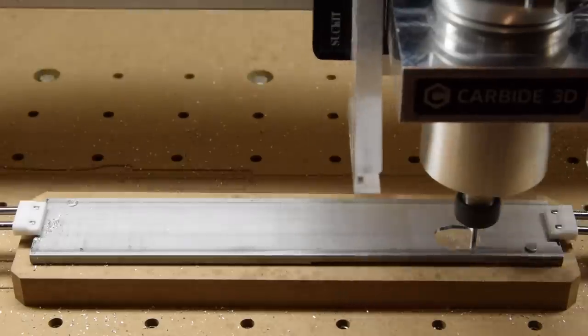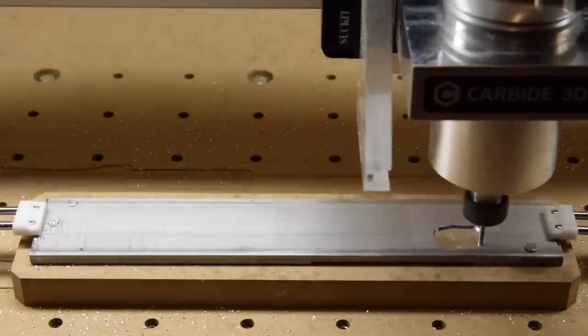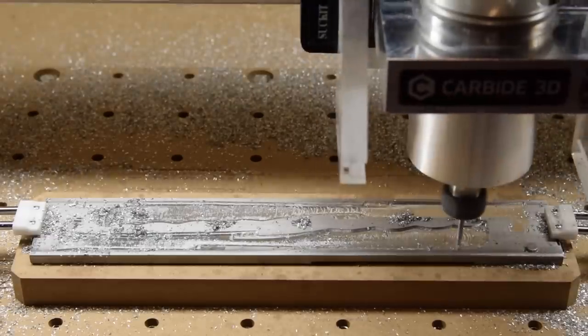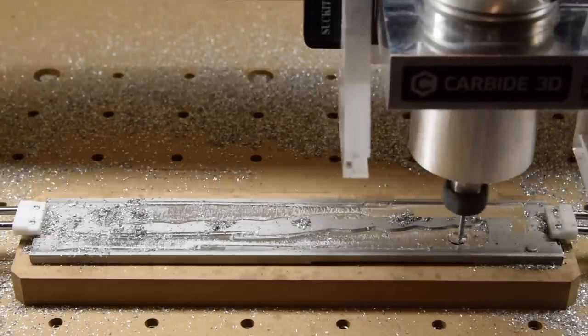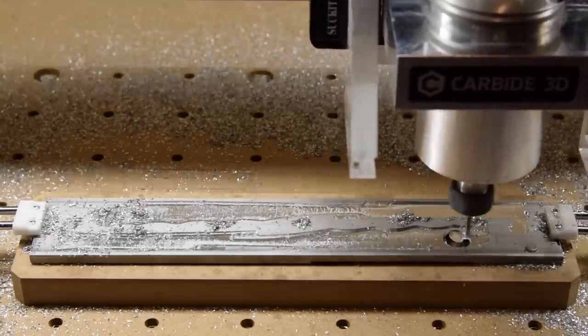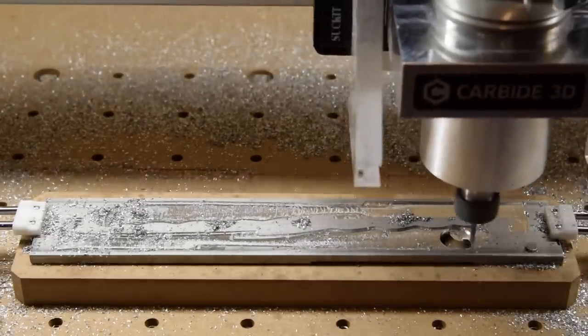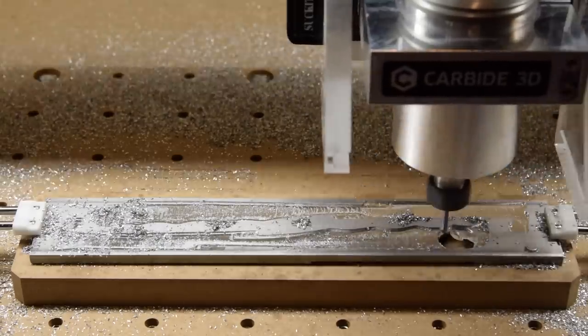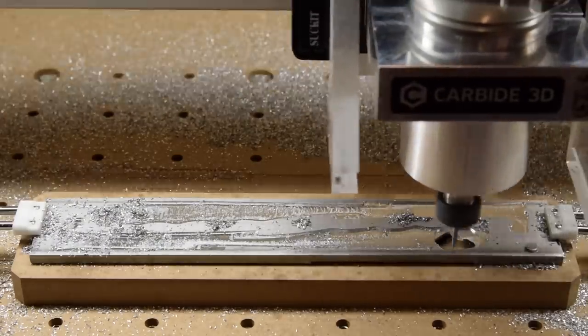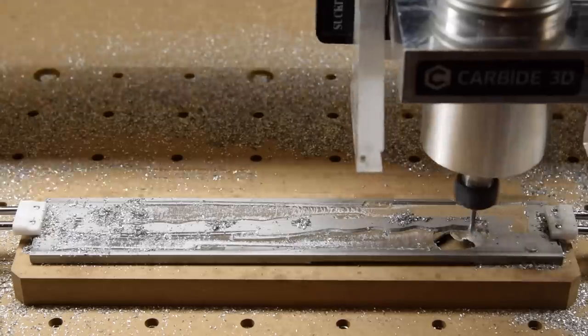After flipping over my stock and using the pins to realign it, I ran the reverse side operations. And this time, my chatter problems were exaggerated even more since the stock had been weakened by material removal. Because of the small margins around my part, I wasn't comfortable using clamps in the middle of the stock, so I just had to suffer through listening to the chatter as I went through my eighth inch end mill operations.